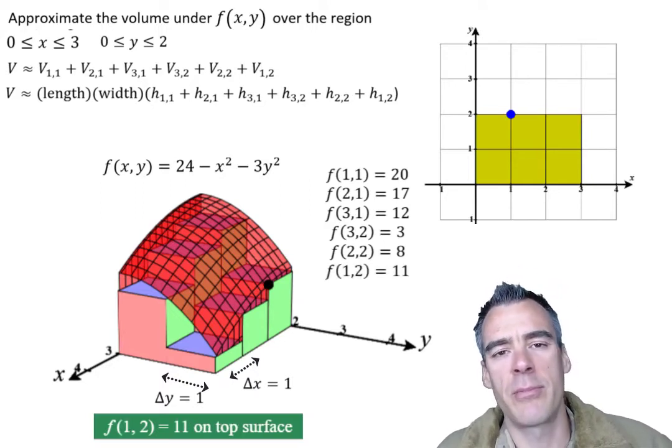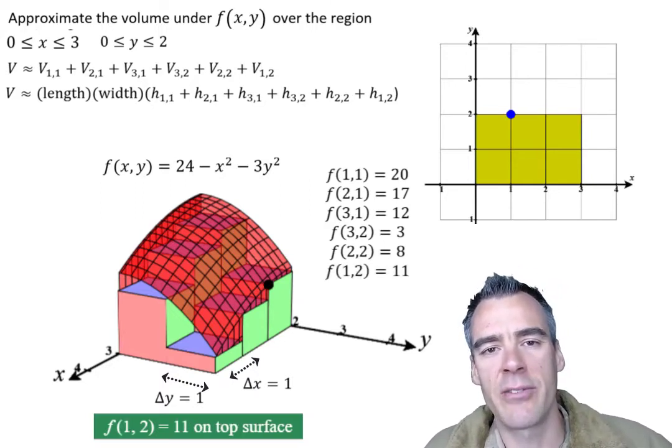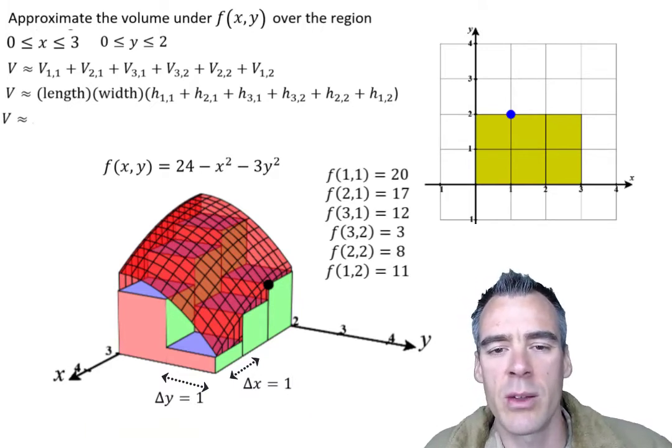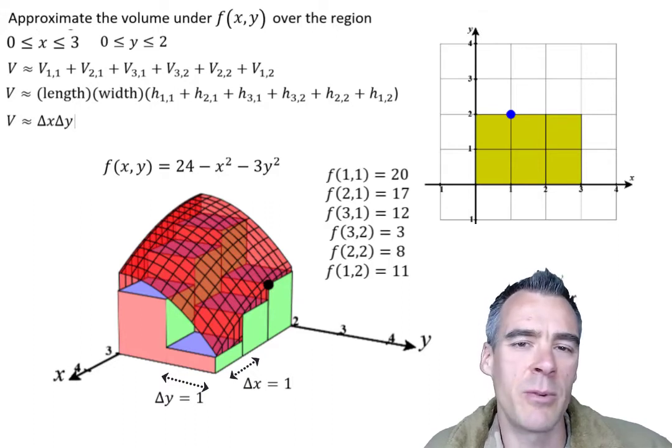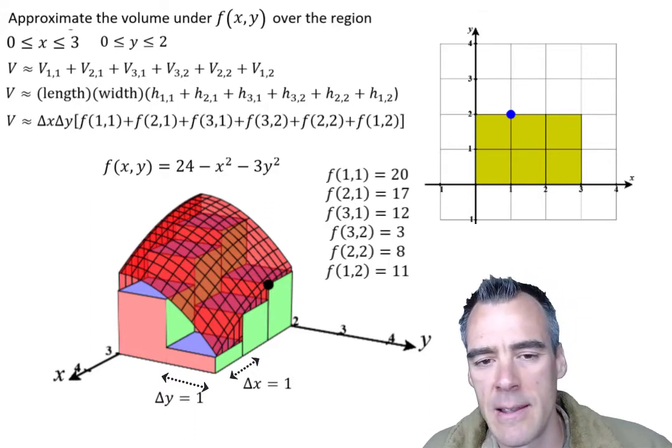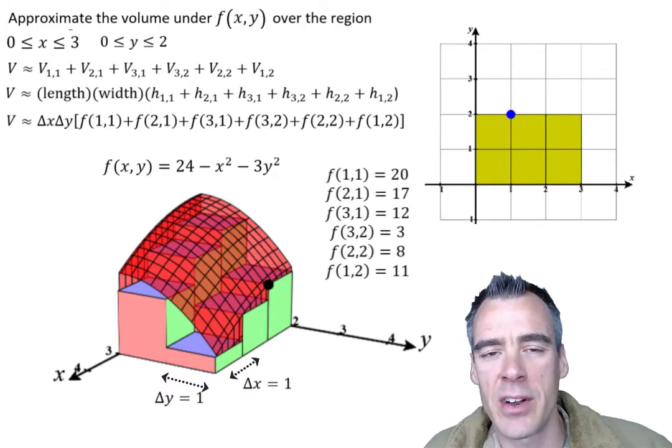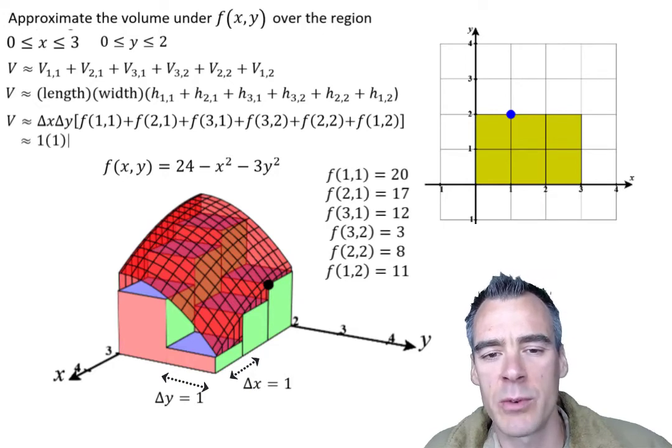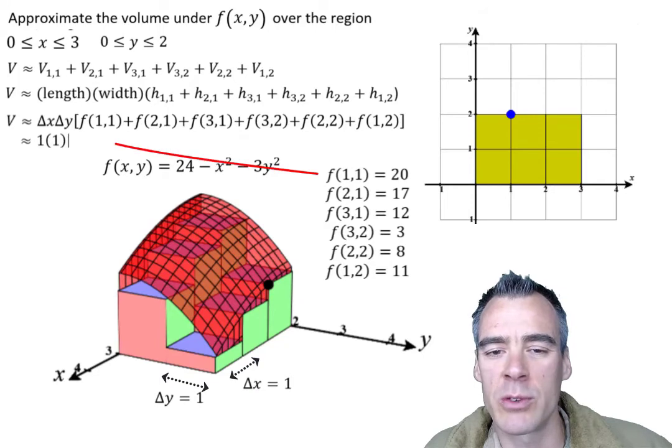So now we have really all the information we need, we know the length, width and height of all of these rectangular prisms. So our total volume is going to be our delta x times our delta y times our function evaluated at each of these points. And we already found that function, that height, and so we can just go ahead and plug these in. So our delta x if you recall was just 1, our delta y was 1. Our function evaluated at x equals 1 and y equals 1 was 20.